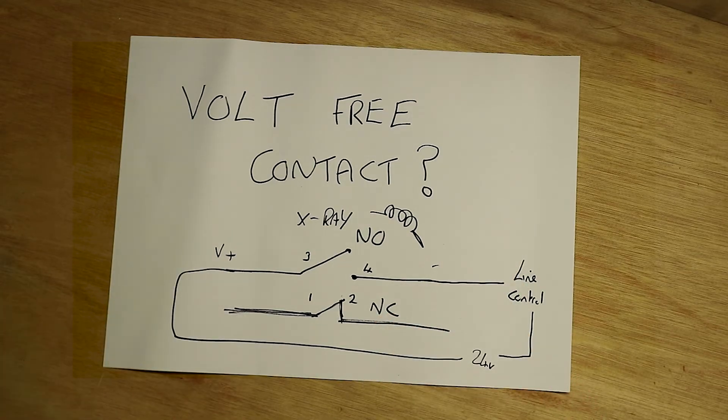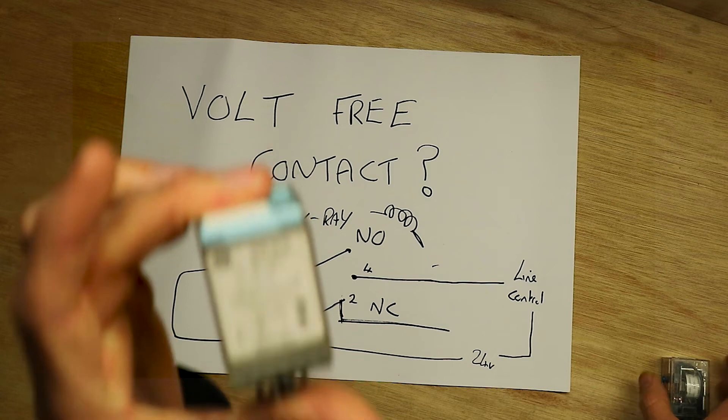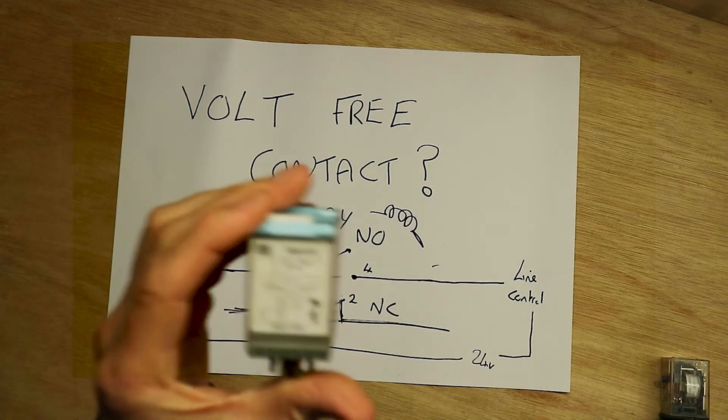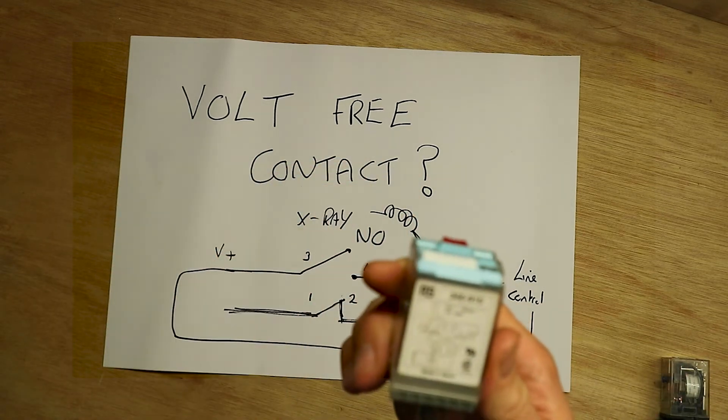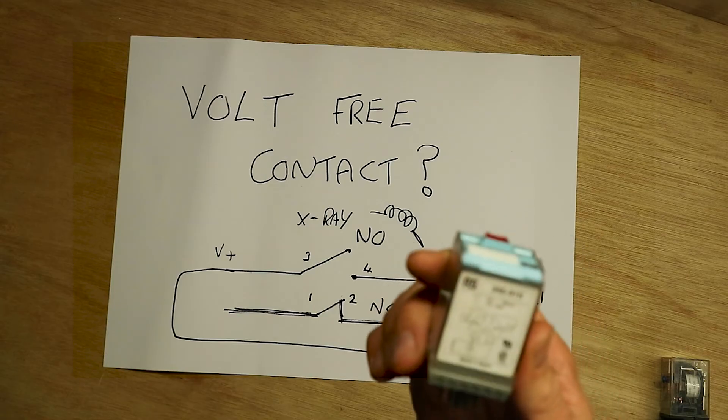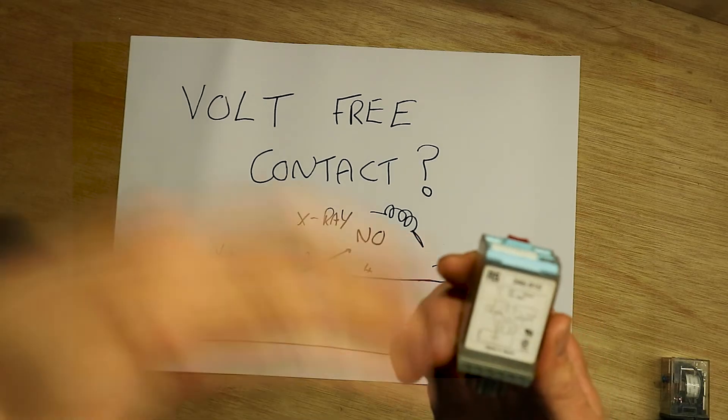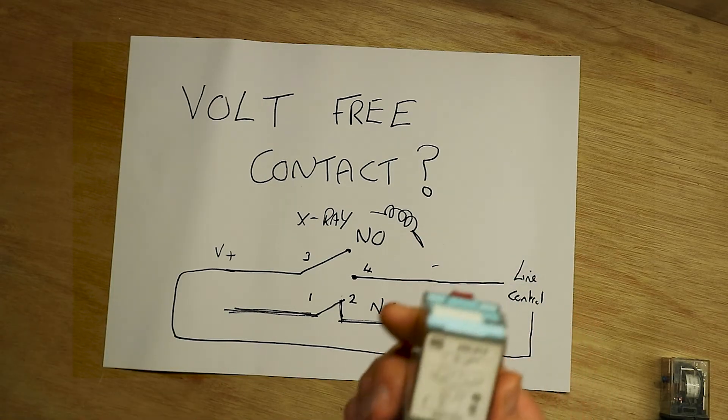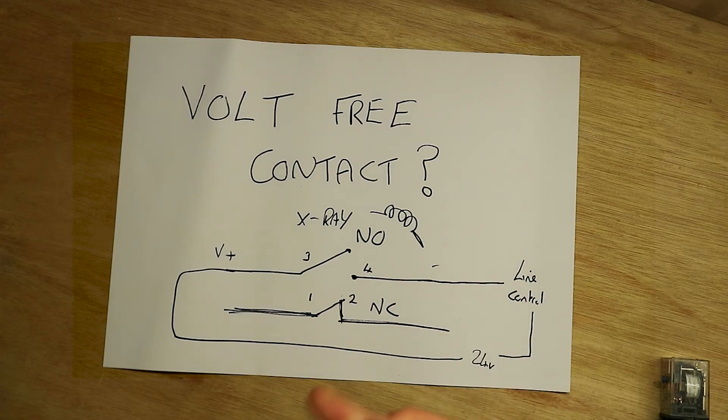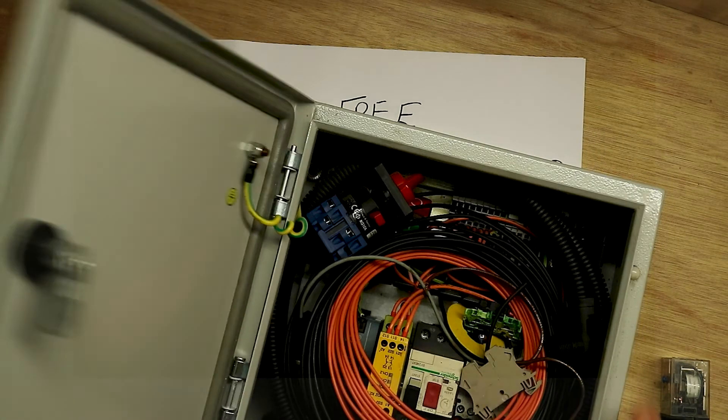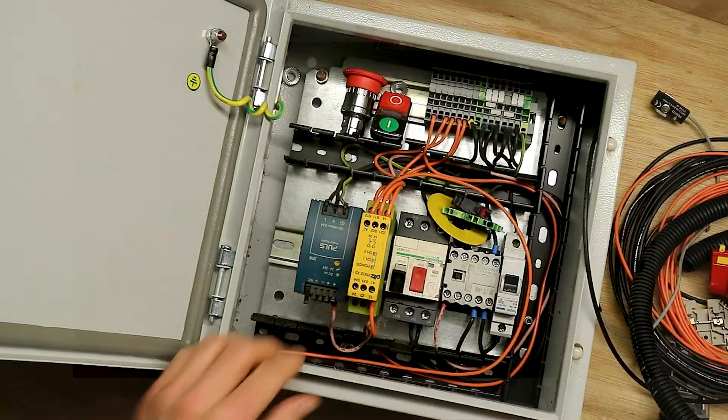Wet, dry contacts, whatever. Contacts that you can use for whatever purpose you want. They are electrically separated from the other machine, and you can use them for line control signals. Basically, you can use them in these relays, safety relays. I do have a safety relay in here.